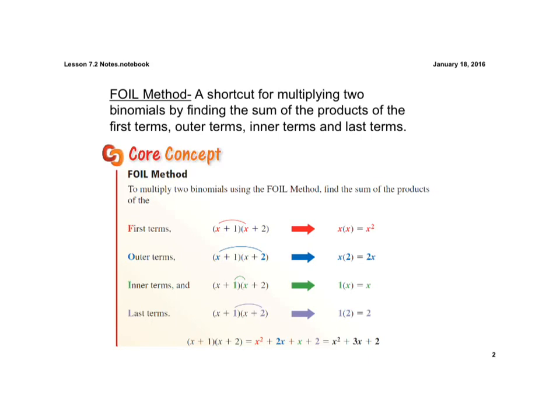One method used in your book is called the FOIL method. This is a method we're trying to get away from because it really only works to multiply two binomials times each other. We want to be able to expand our possibilities when multiplying polynomials.